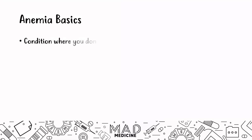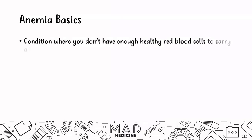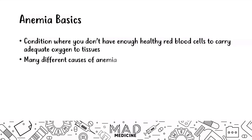Anemias are conditions where you don't have enough healthy red blood cells to carry enough oxygen to the tissue, and there are many causes of anemia. We can break up anemia into two main classifications.